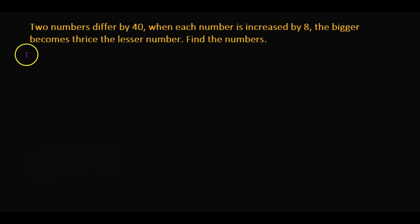The problem is: two numbers differ by 40. When each number is increased by 8, the bigger number becomes thrice the lesser number. Find the numbers. Let's start. First we need to read the question slowly and try to understand it bit by bit.